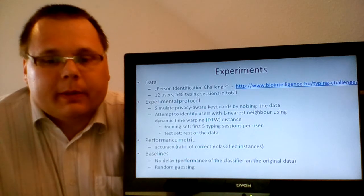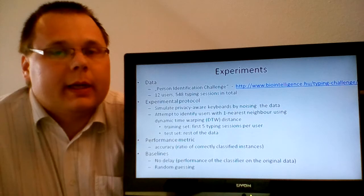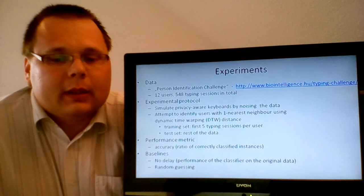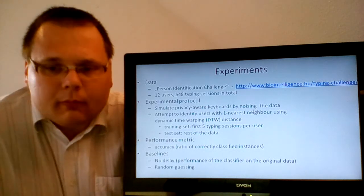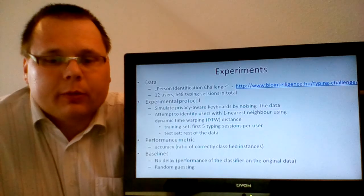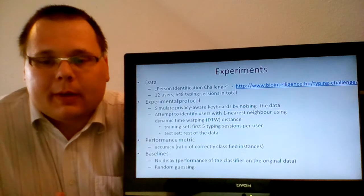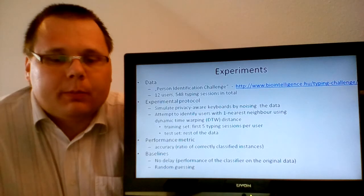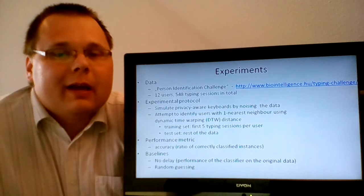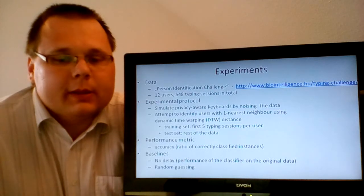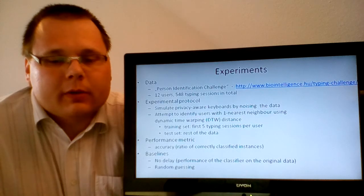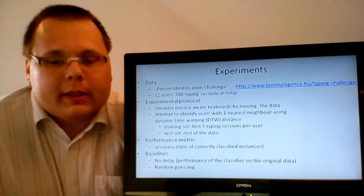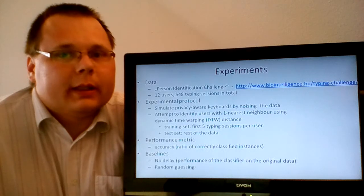In the classification experiments, we used the first five typing sessions per user as training data and the rest of the data served as test data. This is in accordance with the data splits used in the aforementioned challenge. We used the accuracy of the classifier as performance metric. Note, however, that our primary goal is to make user identification difficult and therefore low accuracy indicates that the proposed privacy-aware keyboard models work well, whereas high accuracy indicates the opposite. We compared the accuracy in case of the privacy-aware keyboard models with the accuracy in case of a standard keyboard, that is, the accuracy obtained on the original dataset without any additional noise.